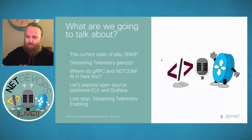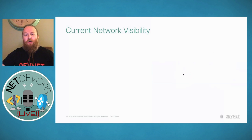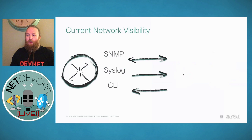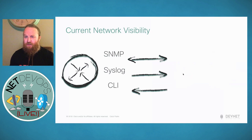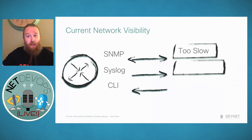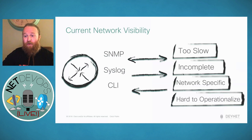Let's look at our current network visibility. Currently, a lot of network visibility is SNMP, Syslog, or the command line interface — three things that, as a network engineer, you'd be very familiar with across various different systems. However, we find these things can be too slow, incomplete, network-specific, or hard to operationalize.